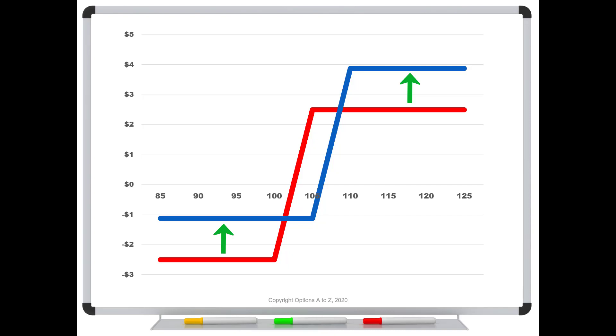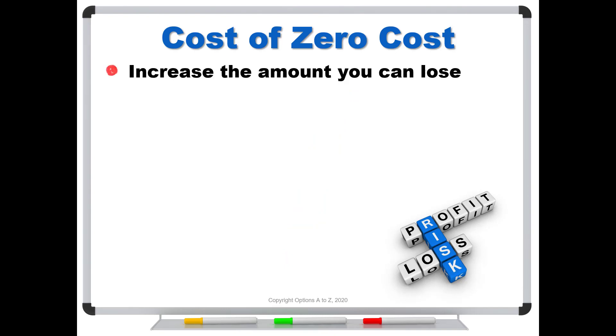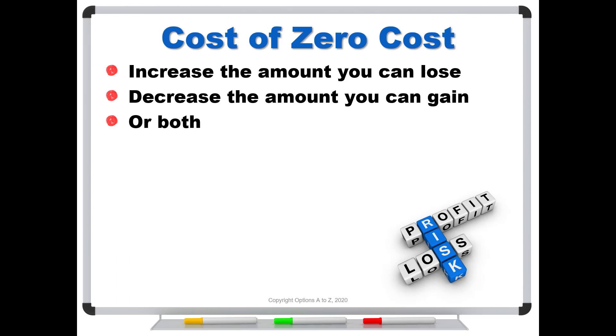The thing that you have to understand is that there is always a cost or a trade-off. Don't get hung up on the words debits and credits or even zero-cost. Always ask yourself what's your goal and what do I need to do to accomplish that goal. Sometimes it will be with debits, sometimes with credits, and sometimes yes, you might be better off with a zero-cost collar. What is the cost of a zero-cost? You can increase the amount you can lose or you can decrease the amount you can gain, or both. It's not necessarily money that you had to spend, but it's because you're either accepting more risk or cutting down your potential rewards.